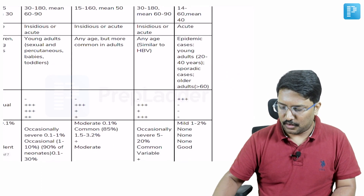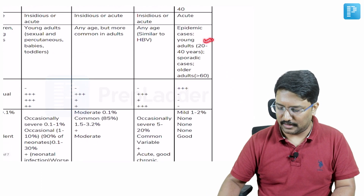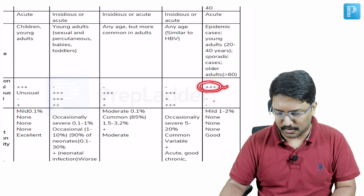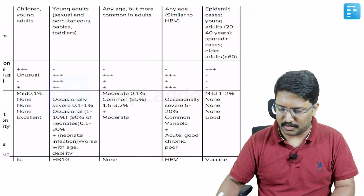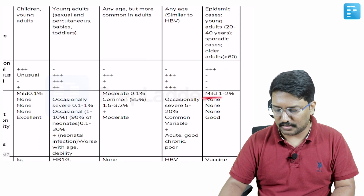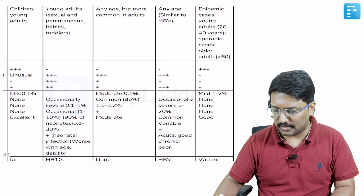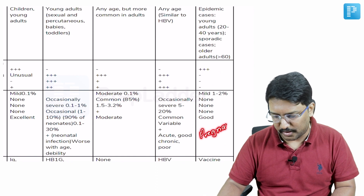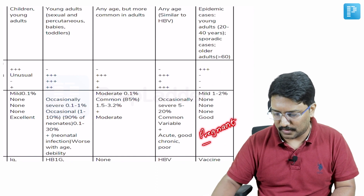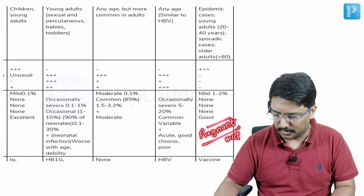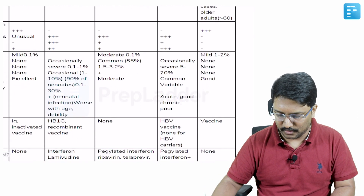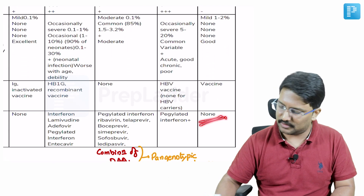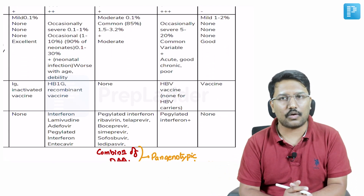HEV affects relatively young adults. The route of transmission is feco-oral — there is no parenteral route of transmission documented. Most cases are mild, but it can cause severe fulminant liver failure, particularly in pregnant women, which is an important MCQ point. We do have a vaccine for HEV, and in terms of treatment, most cases do not require it.